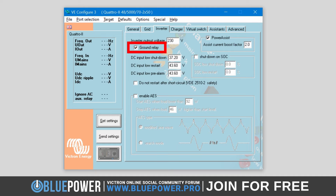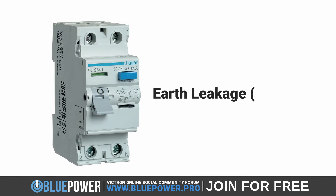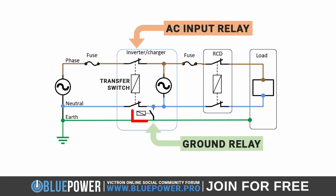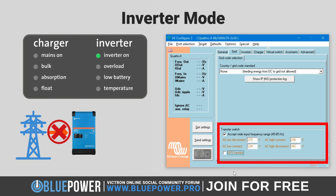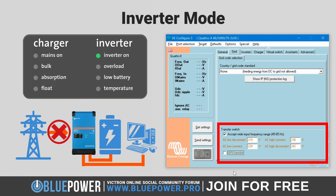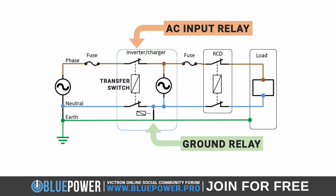The ground relay is an extremely important component that ensures the safety of your electrical system, particularly when your installation includes an earth leakage circuit breaker. The ground relay allows for the selective connection or disconnection of the neutral wire to the protective earth. In inverter mode, with the transfer switch open, the inverter does not receive AC input — it only supplies power via DC sources such as solar or batteries. When in this mode, the neutral of the inverter is connected to the protective earth, or PE, which is vital for safety, ensuring that any stray currents are effectively grounded.